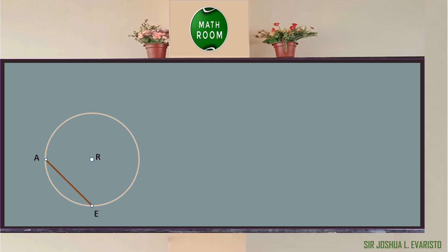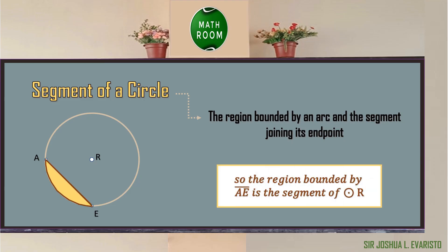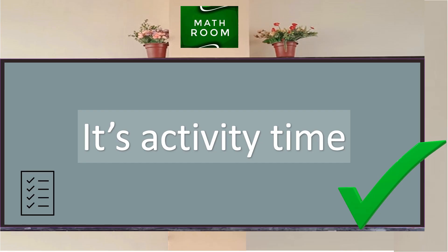For the last part of the video, let us illustrate the segment of a circle. By definition, it is the region bounded by an arc and the segment joining its endpoints. Given circle R, the region bounded by segment AE and arc AE is the segment of circle R, and the yellow region is the segment of circle R.